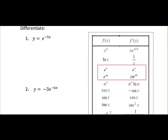Here's a couple of examples. We have y equal to E to the power of minus 5x. When we differentiate it, what we're really doing is differentiating the power and multiplying. So when we differentiate minus 5x, we get minus 5. So what we end up with is minus 5E to the minus 5x.